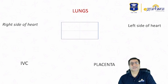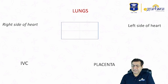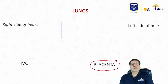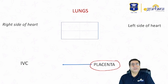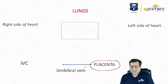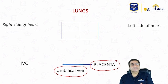The fetal circulation starts with the main organ performing gas exchange — the placenta. It is a low pressure circulation. The oxygenated blood from the placenta enters into the umbilical vein, which carries oxygenated blood. The umbilical vein is one of only two veins in the body that carries oxygenated blood, the other being the pulmonary vein.